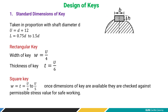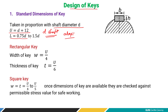Keys are basically designed by adapting their dimensions in proportion to the shaft diameter. The dimension is given as u = d + 12, where d is the shaft diameter. We adapt dimensions from this proportion and then verify the induced stress. The length can be taken as 1.5 times the shaft diameter.